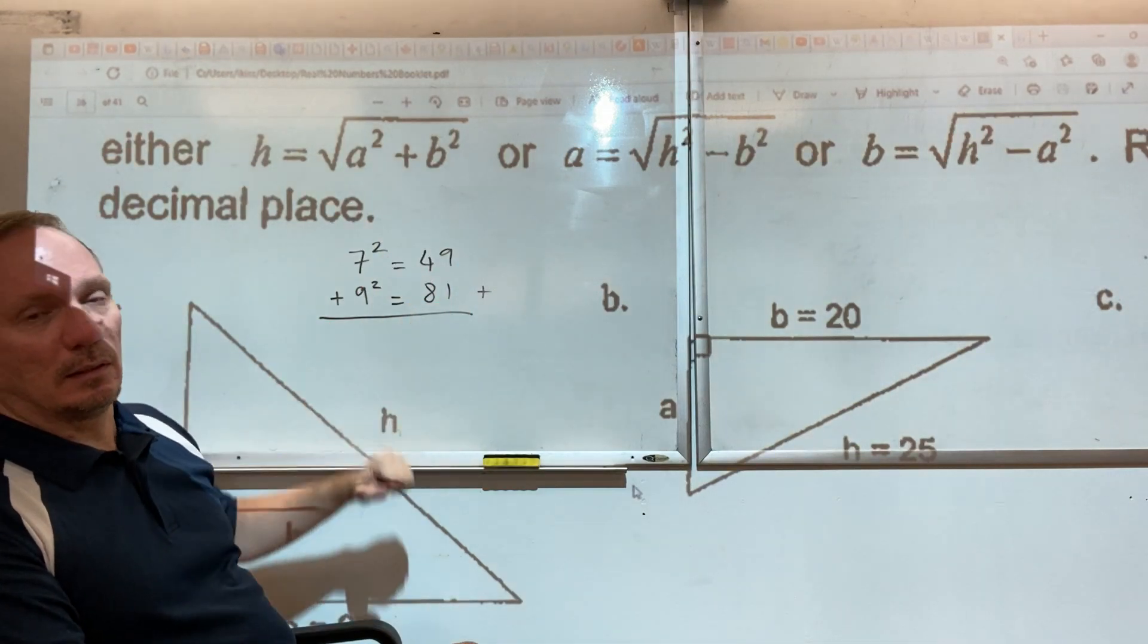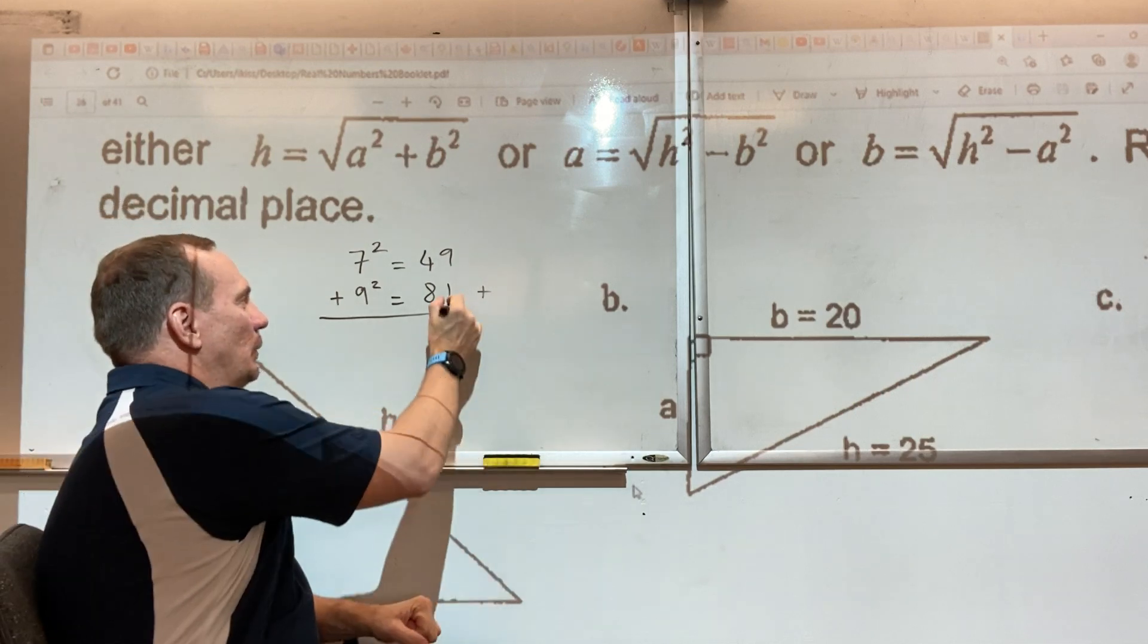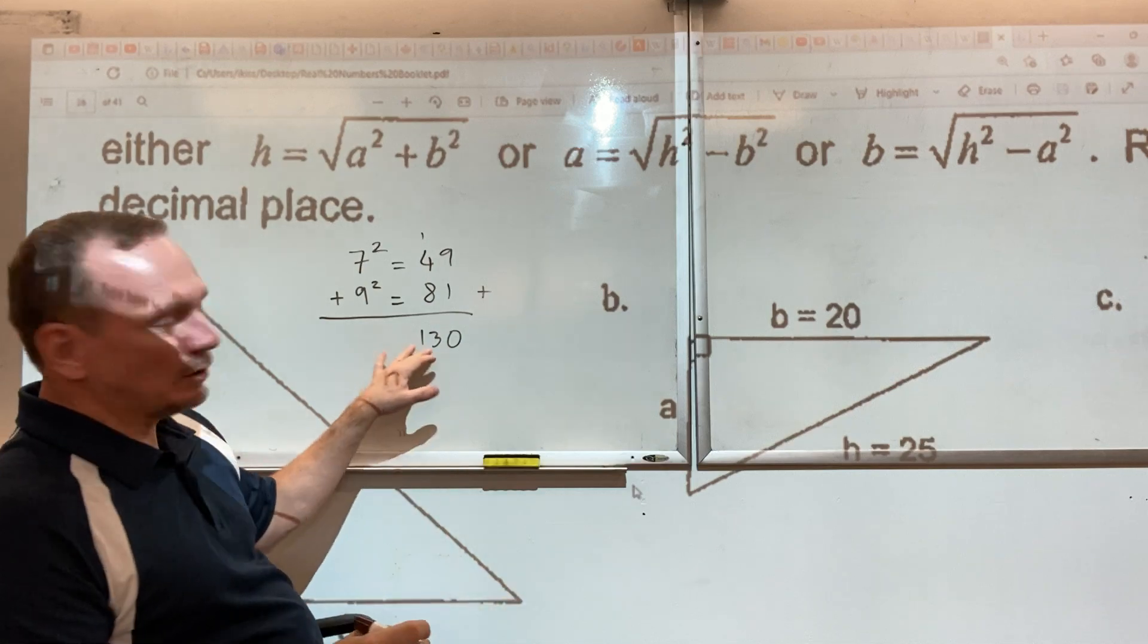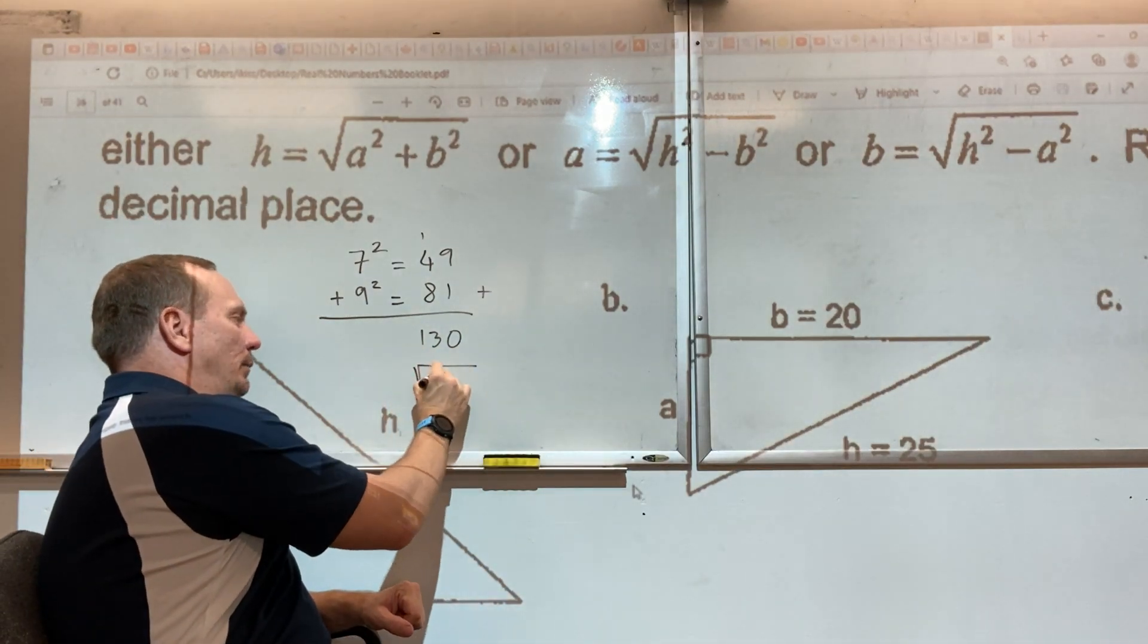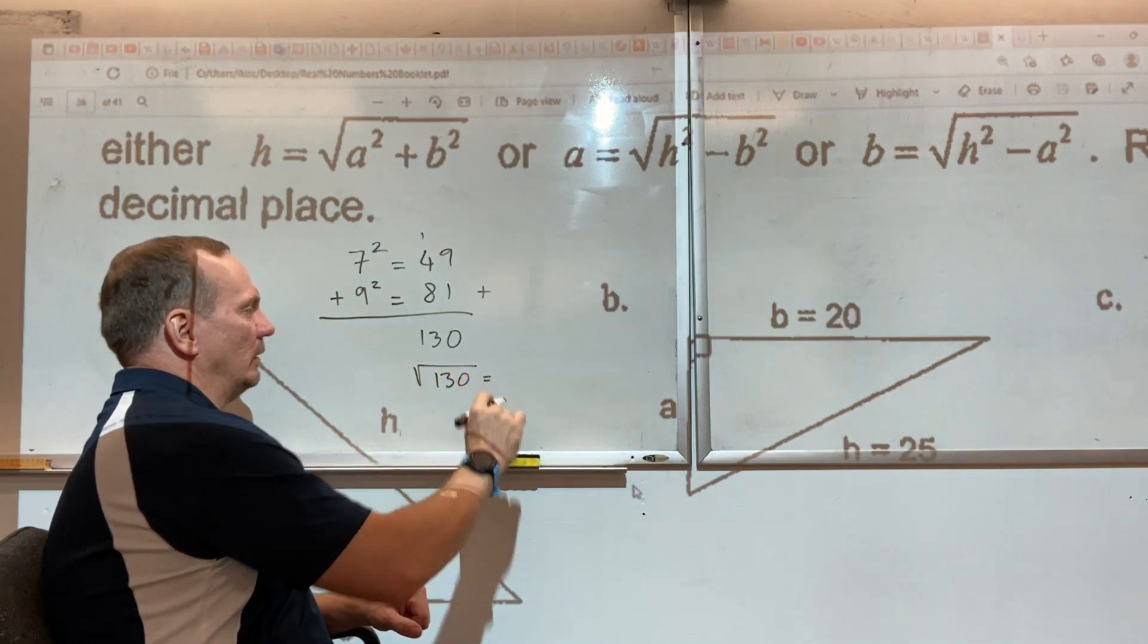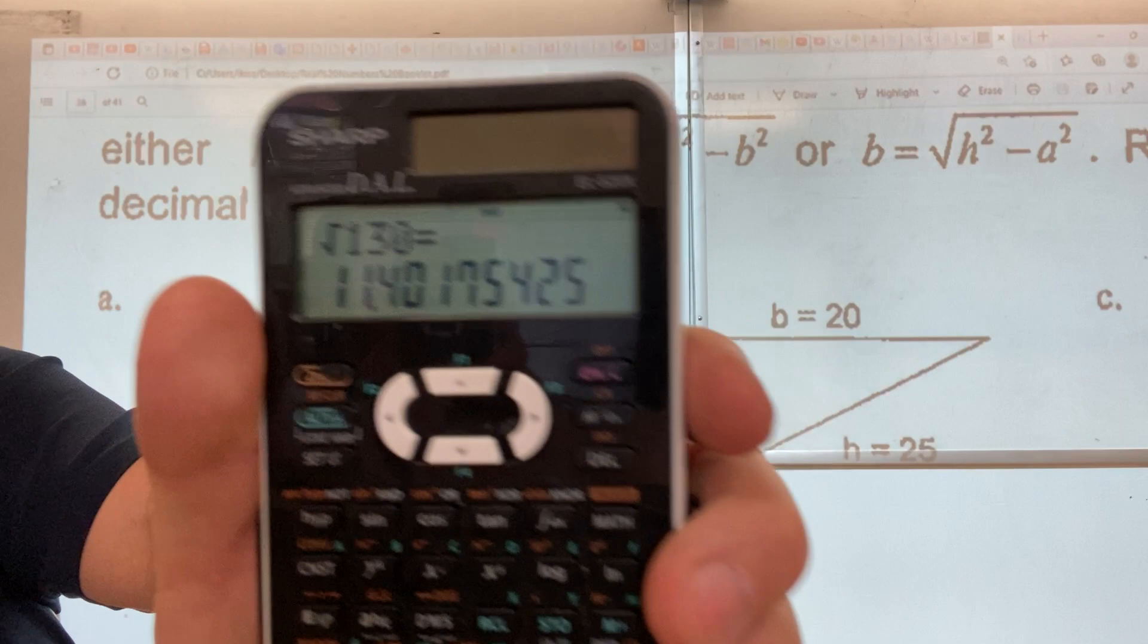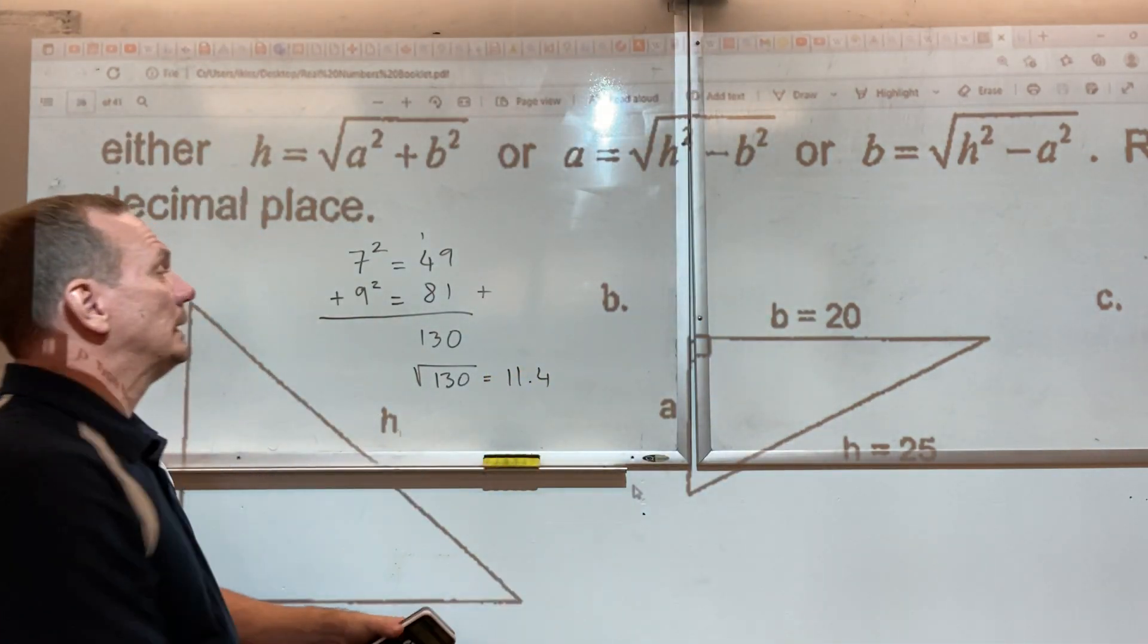Either which way, the sum of the squares is 130, and then in the last step you're calculating the square root of 130, which on a handy calculator is the number 11.4. That's it.